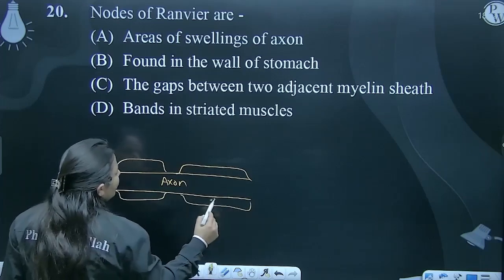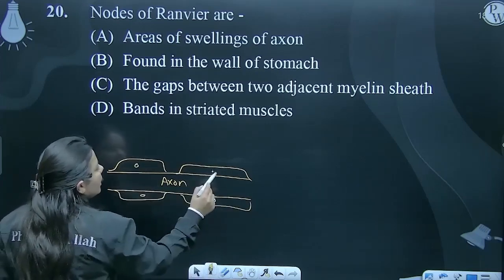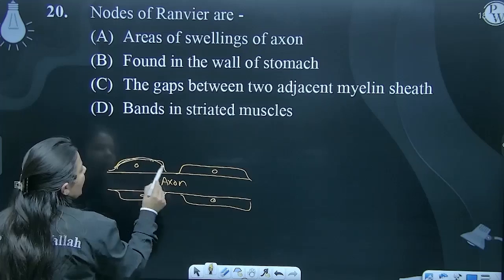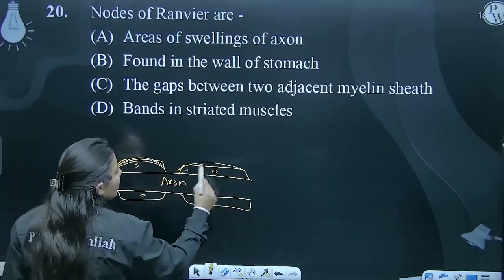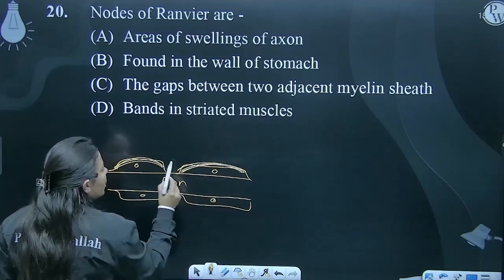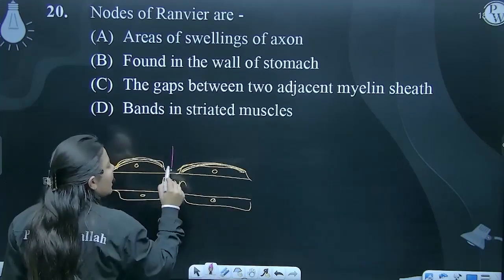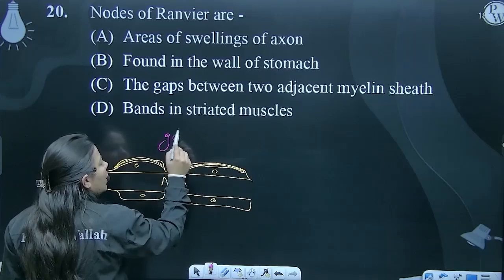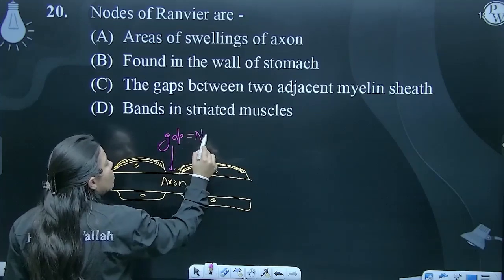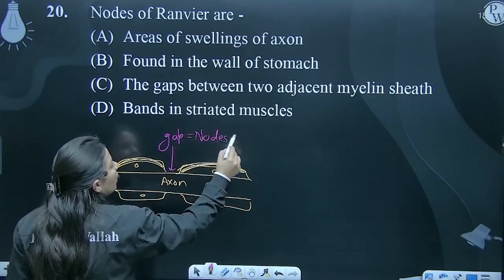We already know these are Schwann cells, this is an axon, it has a myelin sheath deposition. This is your myelin sheath. Here the gap, here this gap. Is what? Nodes of Ranvier.